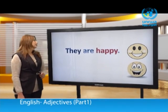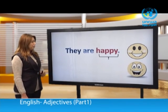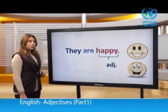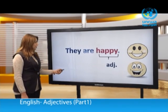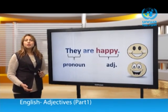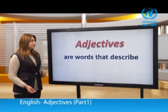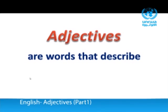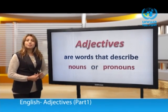Let's look at this sentence: They are happy. What is the adjective? The adjective is 'happy.' It describes 'they' — it could be the people, the students. So 'they' is a pronoun. We conclude that adjectives are words that describe nouns or pronouns.